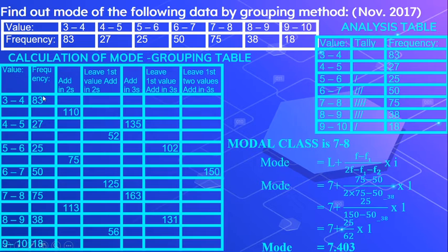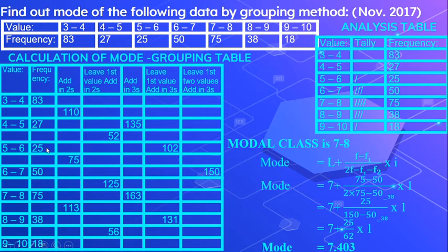Then the next column: we add the frequencies in 3s. 83 plus 27 plus 25 gives 135; 50 plus 75 plus 38 gives 163. We stop since there are no more groups of 3. Then the next column: we leave the first frequency and add in 3s — 27 plus 25 plus 50 gives 102; 75 plus 38 plus 18 gives 131.